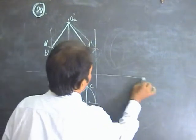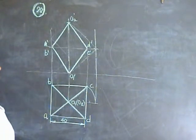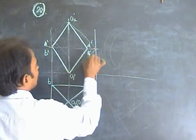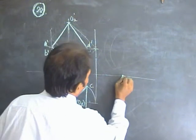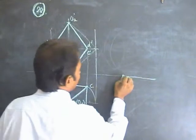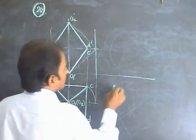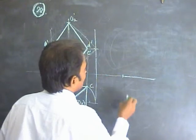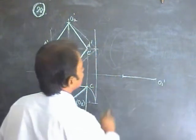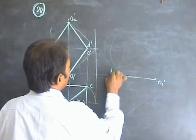Now in the next stage, put one triangular face on the ground. Take face OCD and put it on the ground. Therefore, the new points are: take this end as O1 dash, the other end as C1 dash, D1 dash.